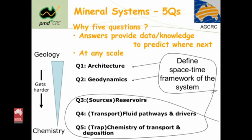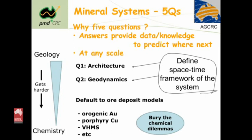You're going to focus on different questions in different ways as you cross scale. As you go down through that list of architecture, dynamics, reservoirs, fluids, pathways, drivers, and getting into chemistry questions, it basically gets harder. At the top it's essentially geology, plus or minus some geochemistry, plus or minus some geophysics. At the bottom it's pure chemistry — and most of us actually avoided pure chemistry in our academic and professional careers. So the default position for most of us, as a community, is we default to our deposit models — orogenic gold, porphyry coppers, SEDEX, et cetera — and we bury our chemical dilemmas in our deposit models.